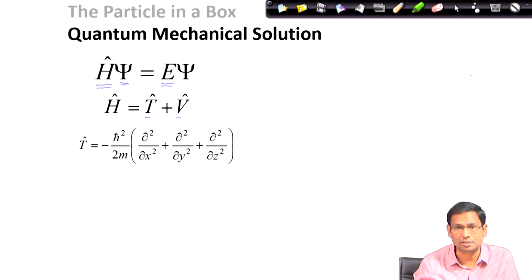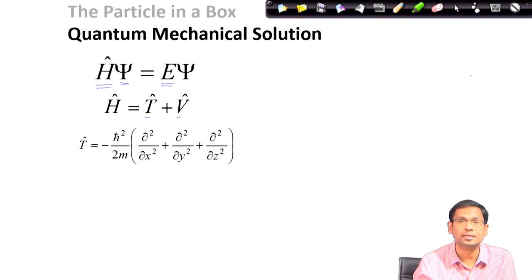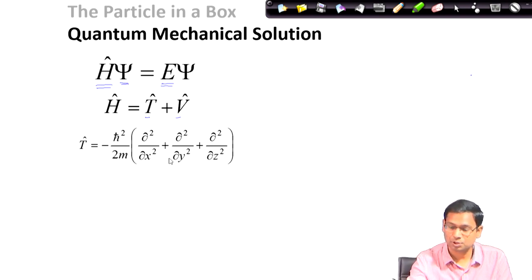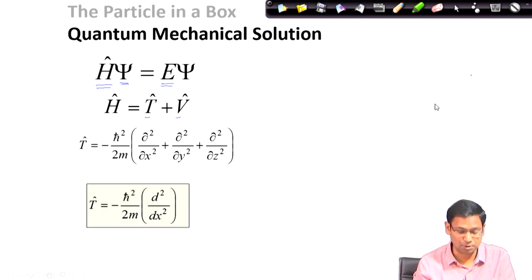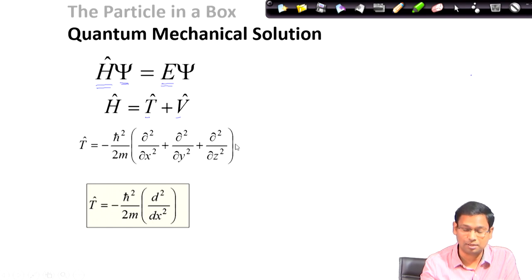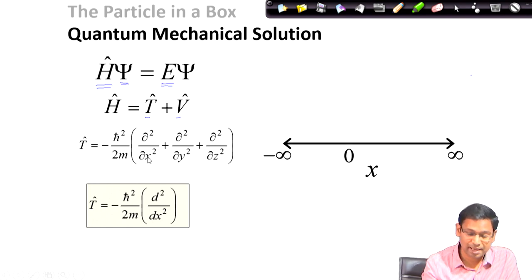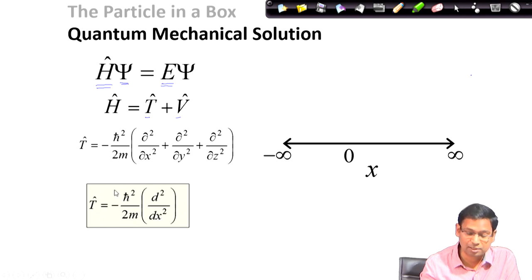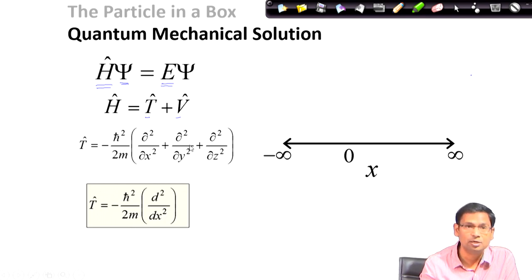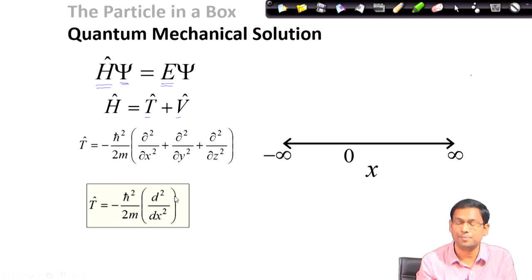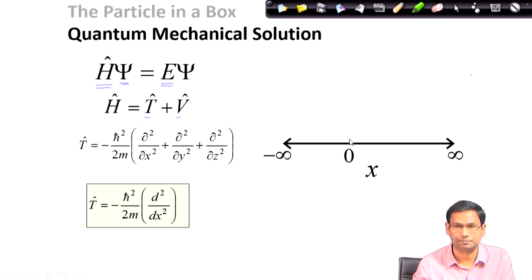In today's class we will restrict our discussion to a simpler system. Instead of looking at the particle's movement in all three directions, we restrict the particle to move only along the x direction. That simplifies our kinetic energy operator — the three-dimensional form had x, y, and z, but now since I restrict movement to only x, the kinetic energy operator has only d²/dx². I have also moved from partial derivatives to simple derivatives, because my particle moves from minus infinity to plus infinity along x.